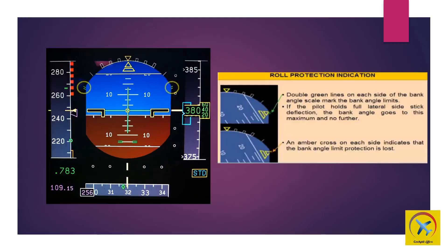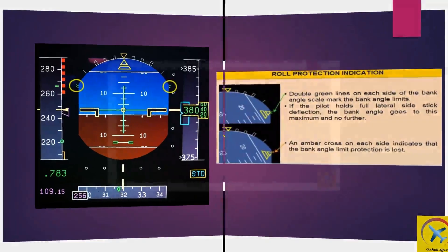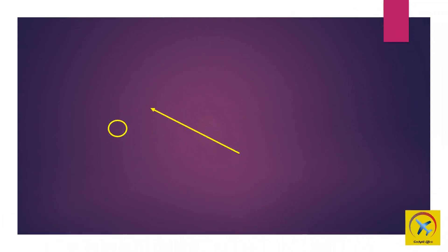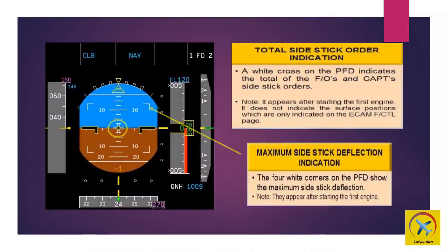A white cross on the primary flight display indicates the total of the first officer's and captain's side stick orders. It appears after starting the first engine. It does not indicate the surface positions, which are only indicated on the eCAM flight control page. The four white corners on the primary flight display show the maximum side stick deflection; they also appear after starting the first engine.